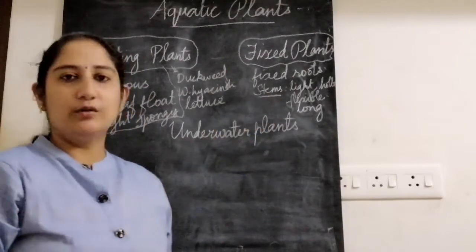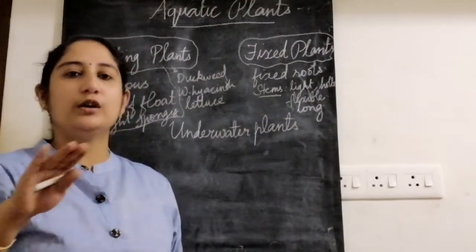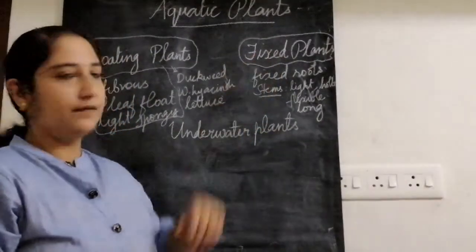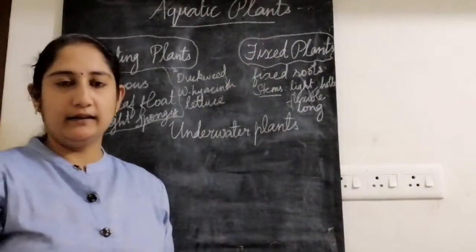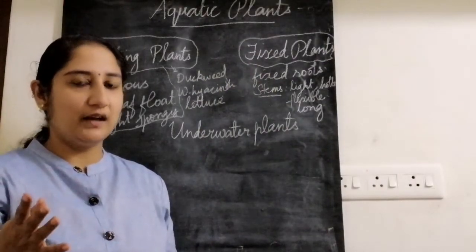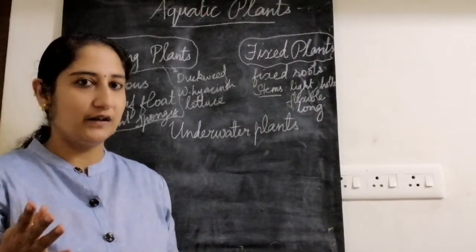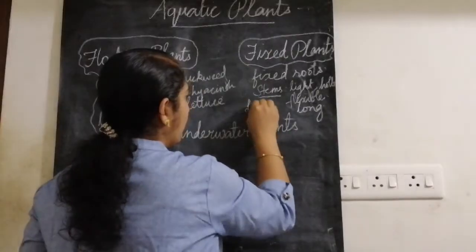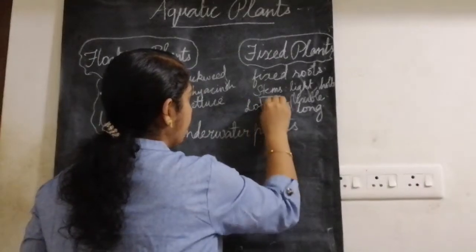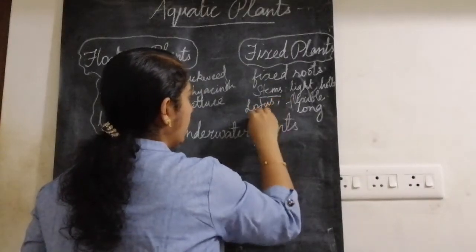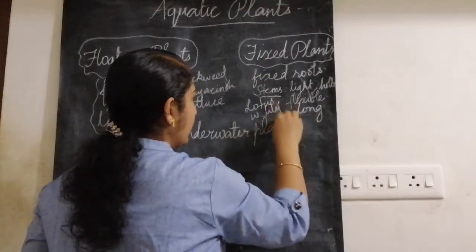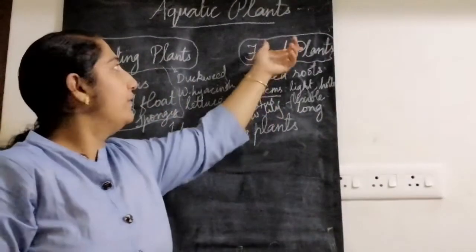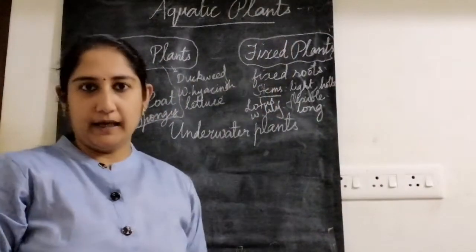The leaves of fixed plants float on the surface. The examples of fixed plants are lotus — which is our national flower — and water lily.